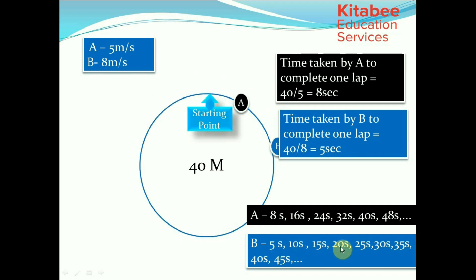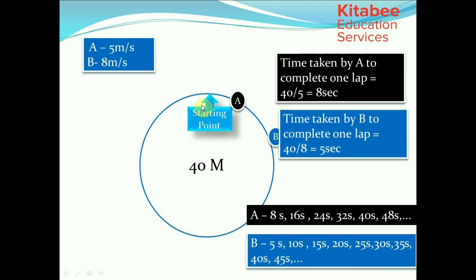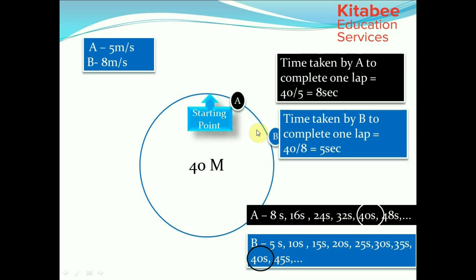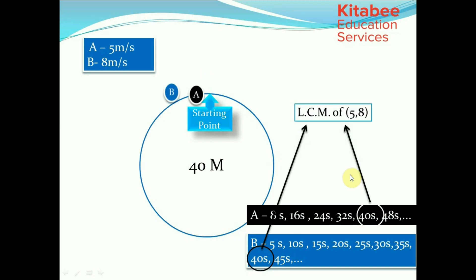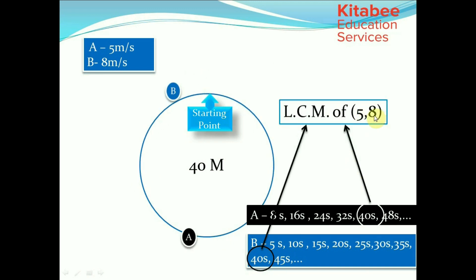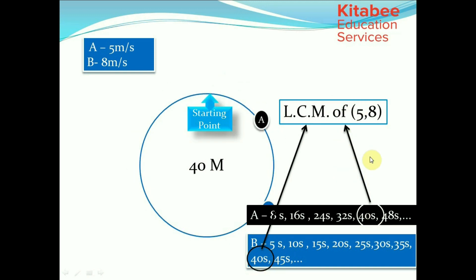If we want to know the first instant at which both A and B would be together at the starting point, that would be 40 seconds. You can clearly see that at 40 seconds both A and B are at the starting point. So 40 seconds is nothing but the LCM of 5 and 8 — the times taken by B and A respectively to complete one lap.